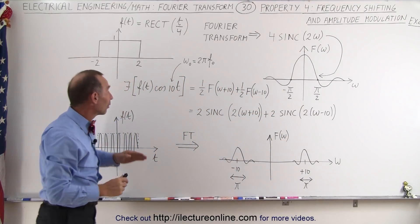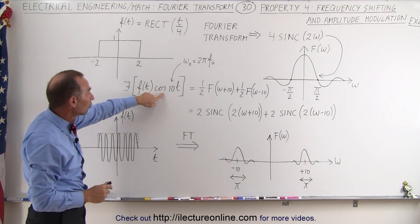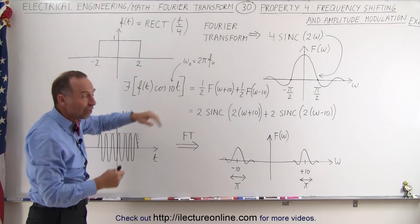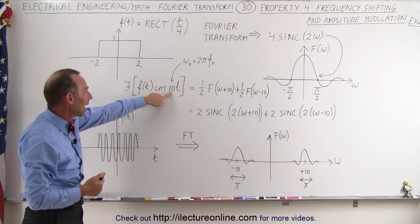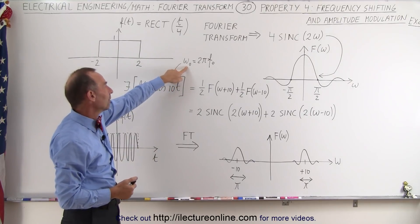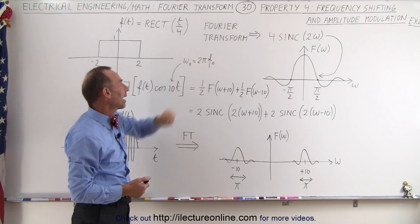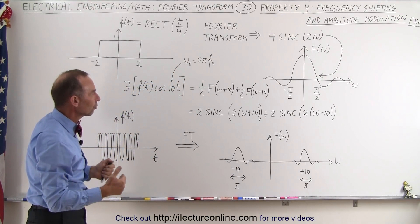So we know now that if we're going to multiply that function times the cosine at some frequency, it's going to cause a shift of the same amount. Remember, this is omega sub naught, also known as 2 pi times the frequency that you want to shift it with.